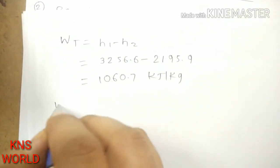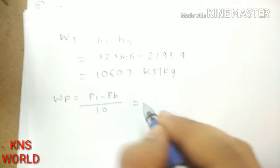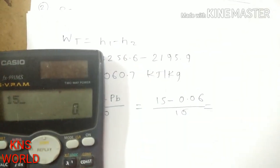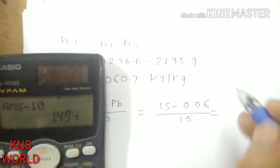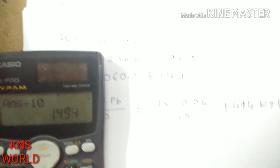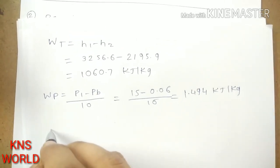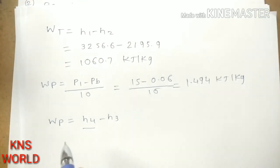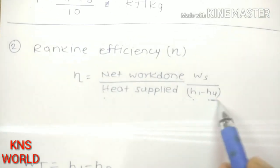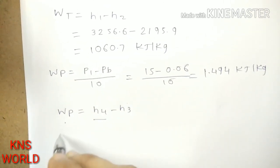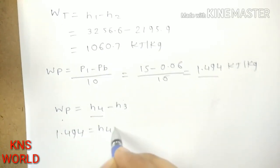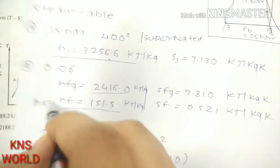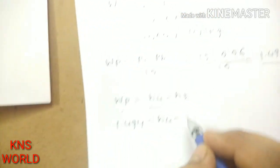Now we find pump work, which is P1 minus PB divided by 10. P1 is 15 bar and PB is 0.06 bar, so pump work equals 15 minus 0.06 divided by 10, which gives 1.494 kJ/kg. Pump work also equals H4 minus H3, and H3 is 151.5 kJ/kg, so we can find H4.